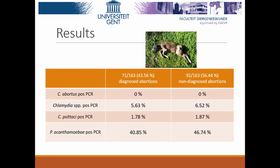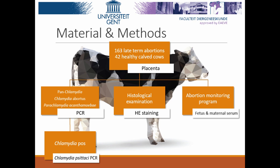A second question from the audience: Was any work done to consider the possibility of environmental contamination given the high percentages? Hans responded: That is a good question. The samples were collected at the farm, and many cases could be contaminated from the environment. The control placenta samples from healthy cows were taken during cesarean section, while the abortion samples were taken after the abortion event, so contamination is possible. Chlamydia and parachlamydia can be found in air and water, so environmental contamination is very plausible.